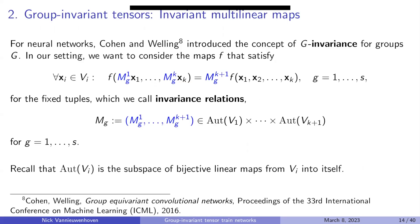We want to impose constraints on multilinear maps such that transforming inputs with invertible linear maps and applying a corresponding output transformation gives the same result as evaluating at the original inputs. We call this tuple of transformations — mg1 through mgk — an invariance relation. Each mgi is an invertible linear map, an element of the automorphism group on the vector spaces — essentially invertible matrices.